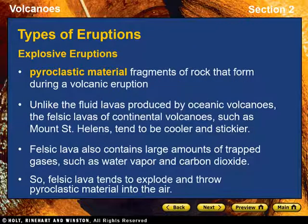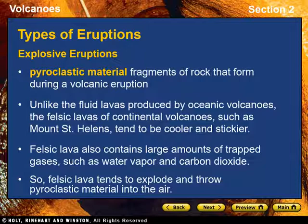Explosive eruptions. Unlike the fluid lavas produced by oceanic volcanoes, the felsic lavas of continental volcanoes, such as Mount St. Helens, tend to be cooler and stickier. Felsic lavas also contain large amounts of trapped gases, such as water vapor and carbon dioxide. When a volcano erupts, the dissolved gases within the lava escape and send molten and solid particles shooting into the air. Felsic lava tends to explode and throw pyroclastic material into the air. Pyroclastic material consists of fragments of rock that form during a volcanic eruption.